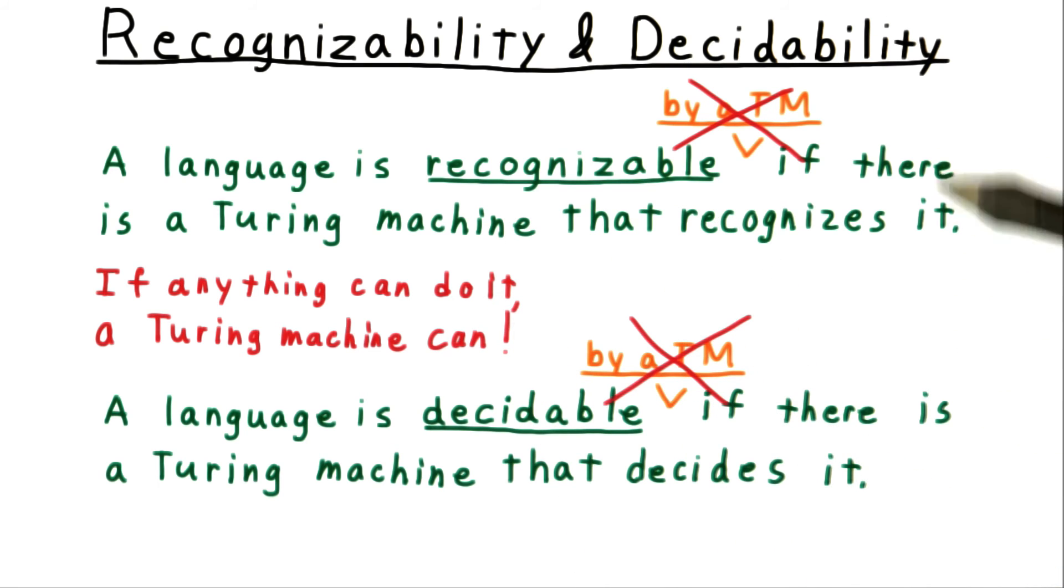We should also make clear the relationship between these two terms. If a language is decidable, then it's also recognizable. The same Turing machine works for both.